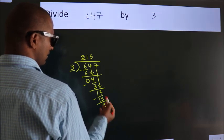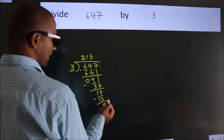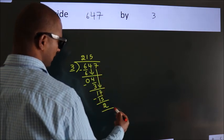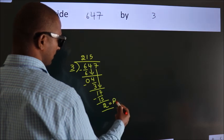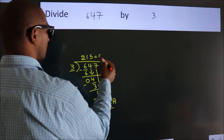After this, no more numbers to bring it down. So, we stop here. This is our remainder. This is our quotient.